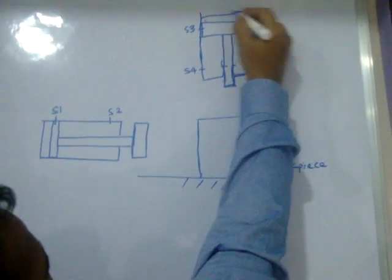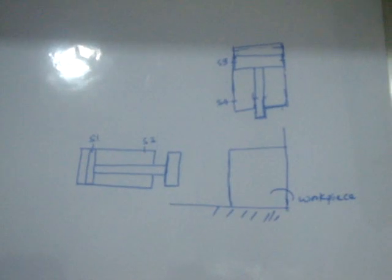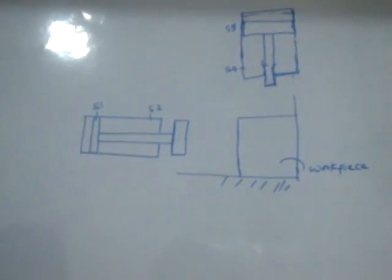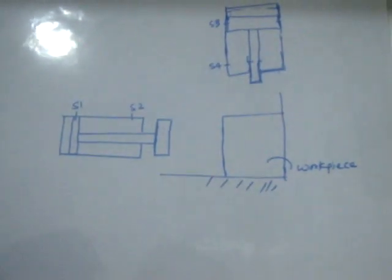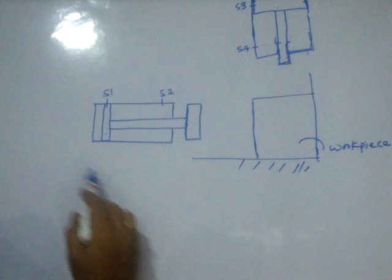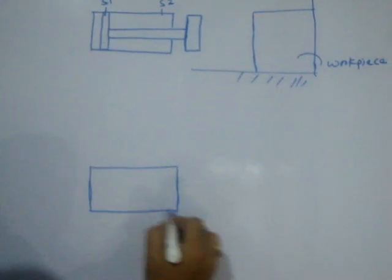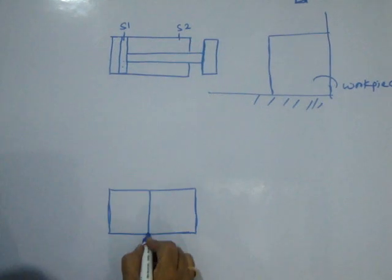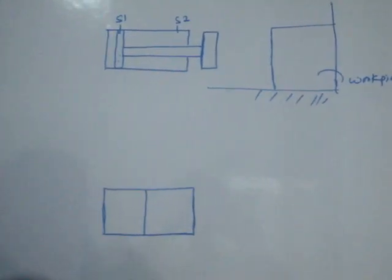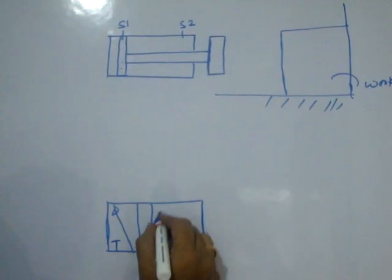All four are proximity sensors — specifically magnetic sensors — because both pistons are magnetic. To control the direction and motion of the first cylinder, we use a valve. In pneumatics, the type of valve is 5/2 — five ports and two positions.